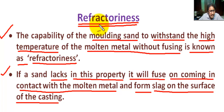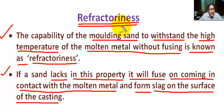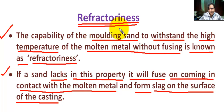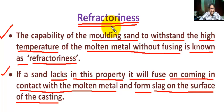Refractoriness is the property of a material to withstand a considerable amount of heat without fusing. It is the ability of molding sand to withstand the high temperature of molten metal without breaking down, fusion, cracking, or buckling.